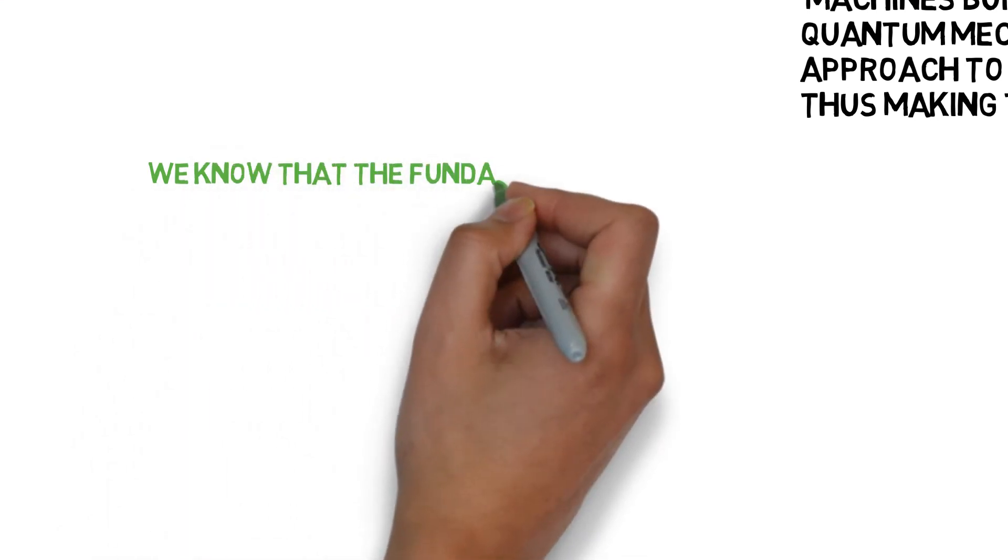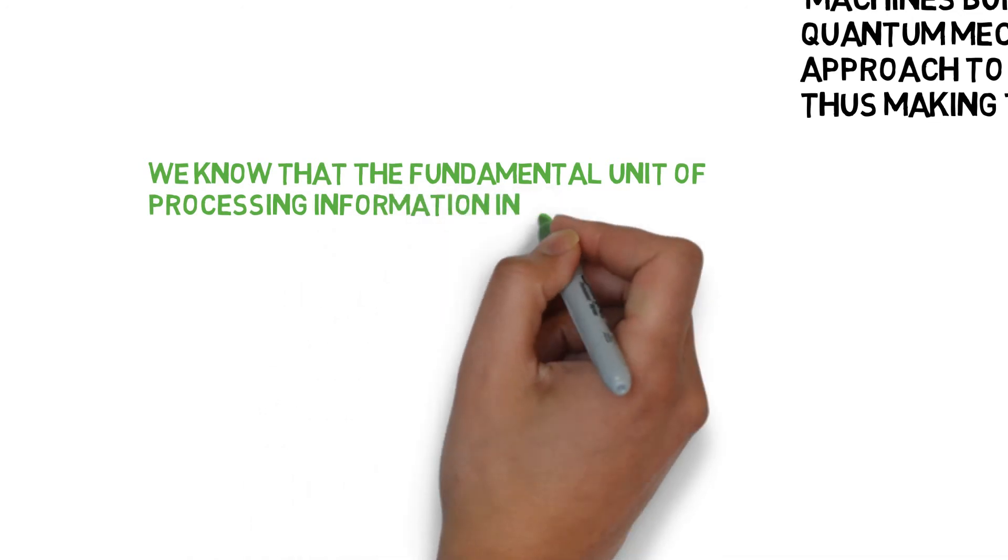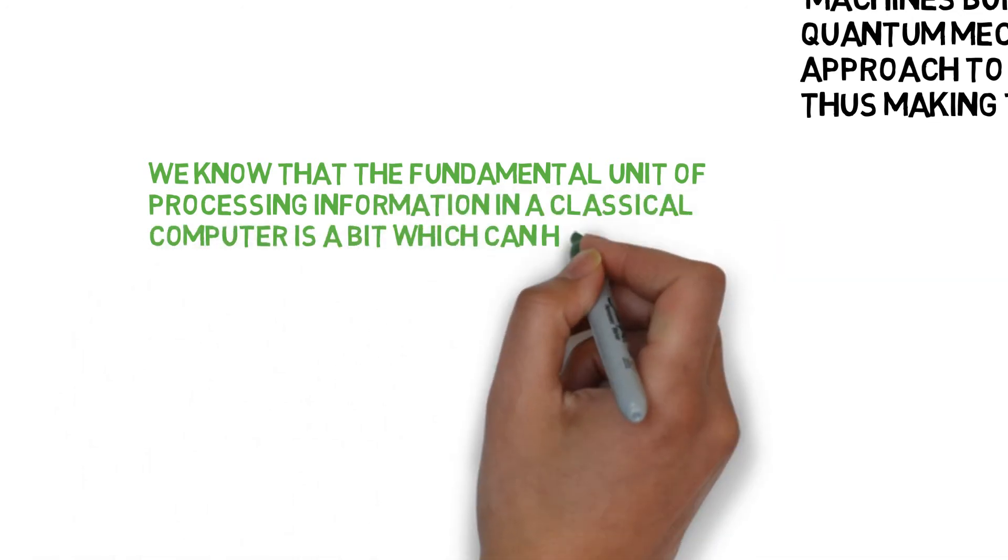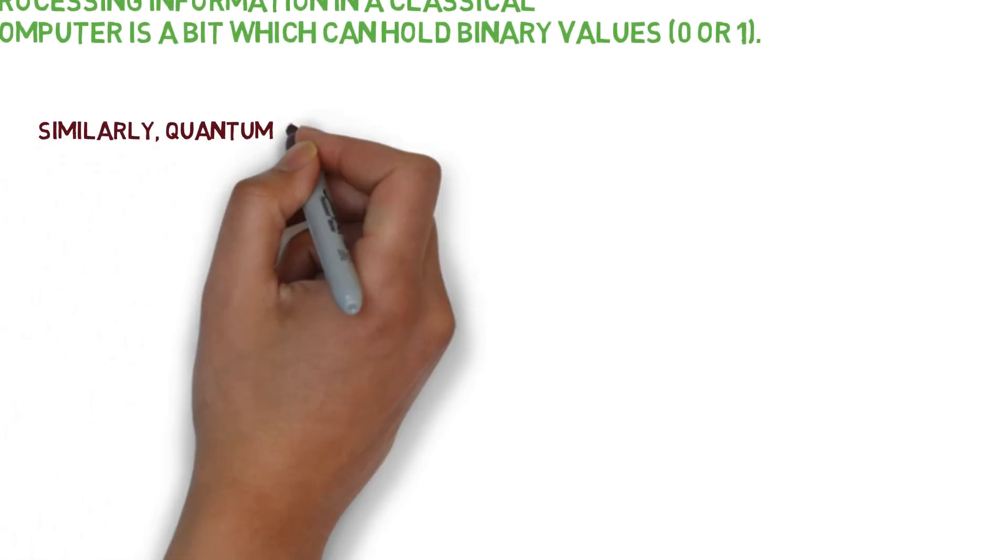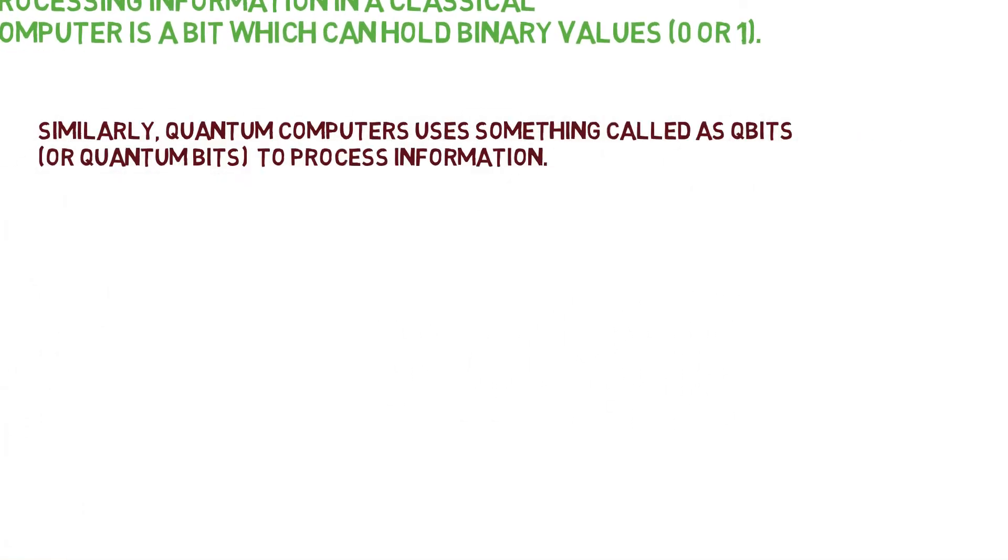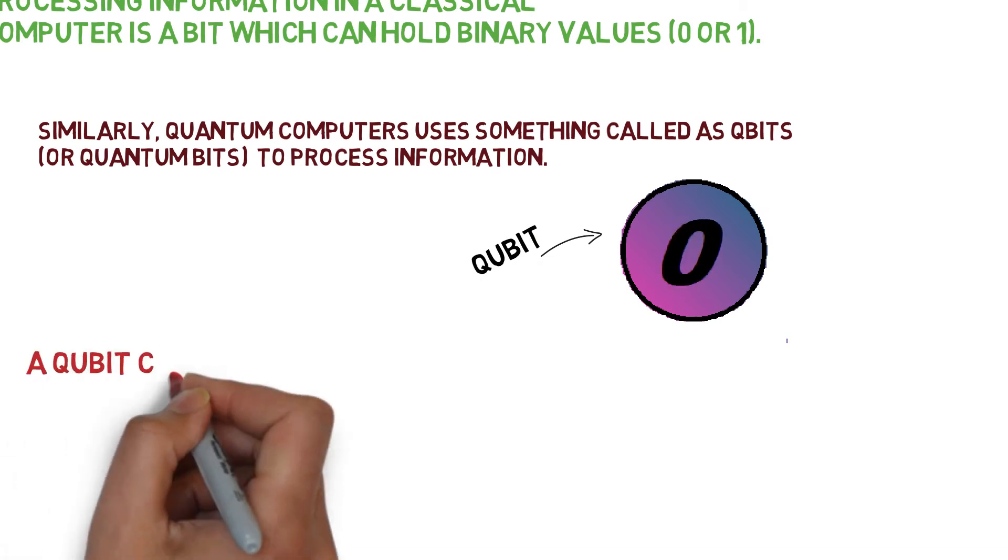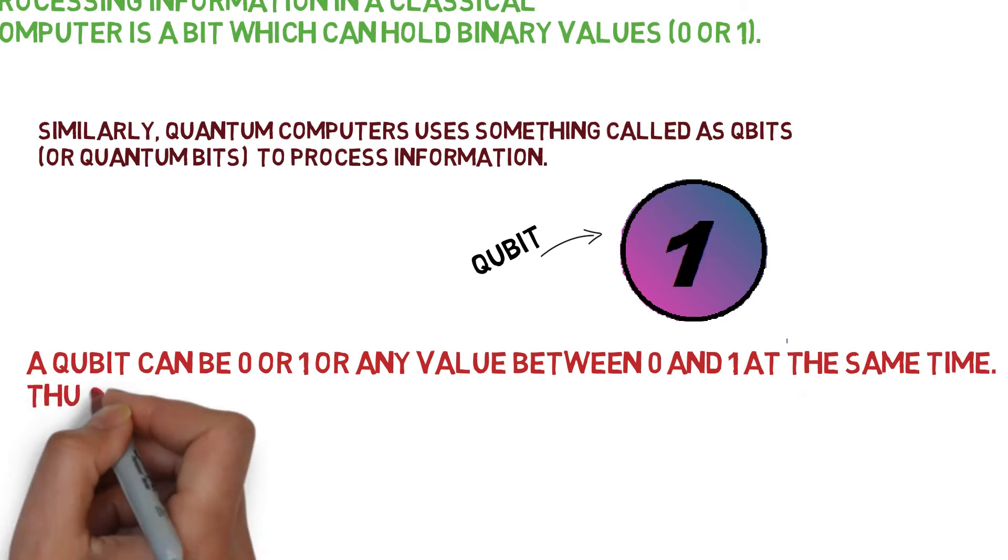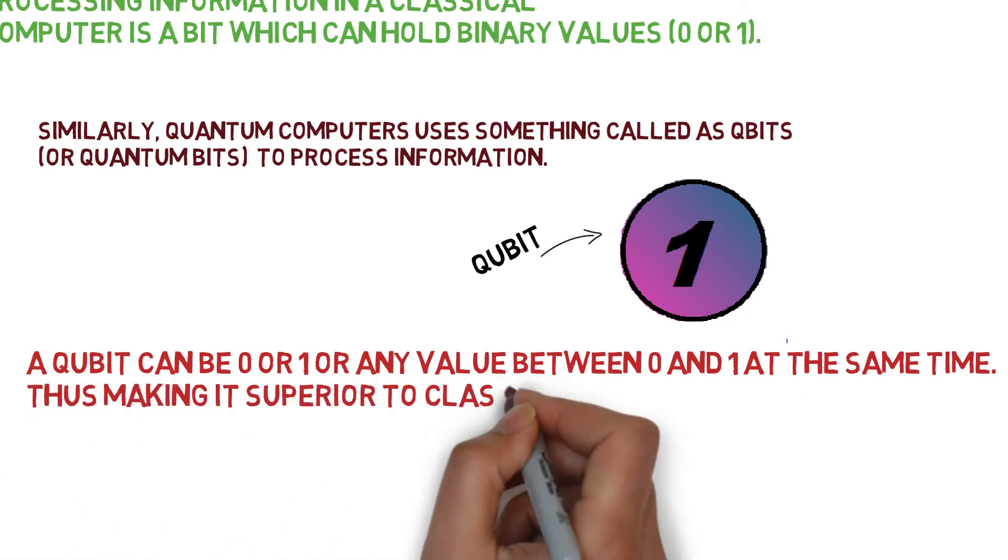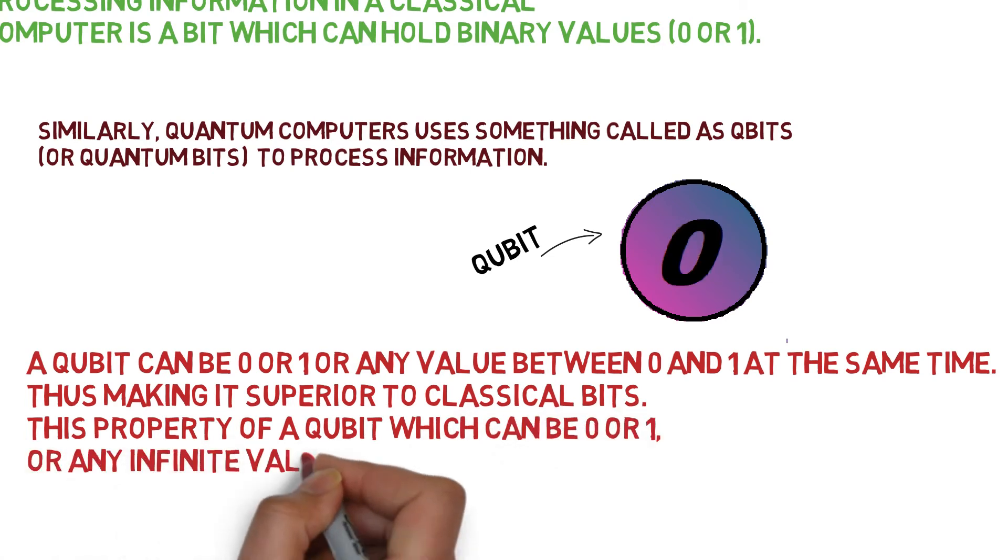We know that the fundamental unit of processing information in a classical computer is a bit which can hold binary values 0 or 1. Similarly, quantum computers use something called qubits to process information. A qubit can be 0 or 1 or any value between 0 and 1 at the same time, thus making it superior to classical bits.